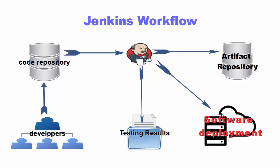If the build and tests are successful, Jenkins will transfer your executable file into an artifact repository or deploy your software onto another server — for example a cloud server where you want to use it. So the code is committed, Jenkins polls the repository at regular intervals, runs the tests, and if everything is successful it creates the executable and saves it to your artifact repository or deploys your code to another server.